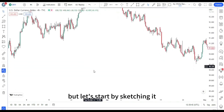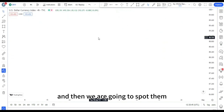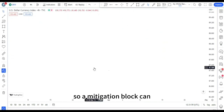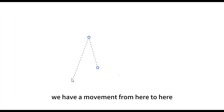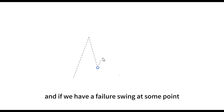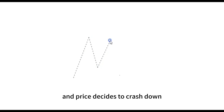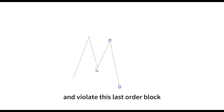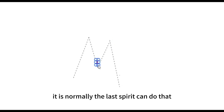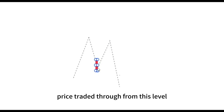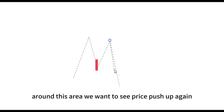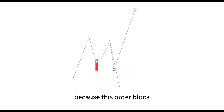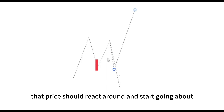Let me start by sketching it live before we go to the chart. A mitigation block can be found on a market that has this pattern. If you have a market forming a proper market structure with a retracement — a movement from here to here — and if we have a failure swing at some point, price decides to crash down and violate this last order block. Remember, the order block is normally the last bearish candle that price traded through from this level. In an ideal smart money concept, we expect this order block to reject price as it comes down.